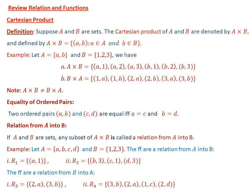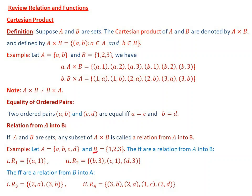Let us proceed to relations from set A and set B. If A and B are sets, any subset of A cross B is called a relation from A into B. For example, let set A = {a, b, c, d} and set B = {1, 2, 3}. Then R1 = {(a, 1)} is a relation from set A into B — that is, R1 is a subset of A cross B.